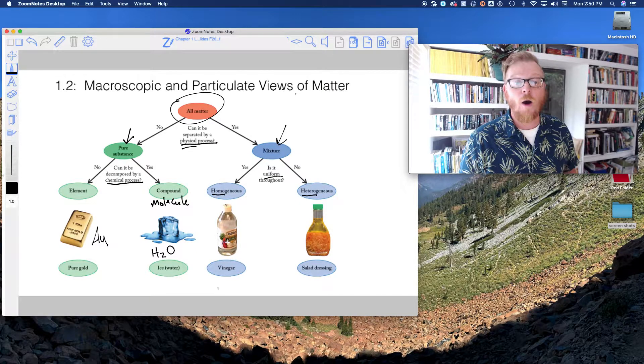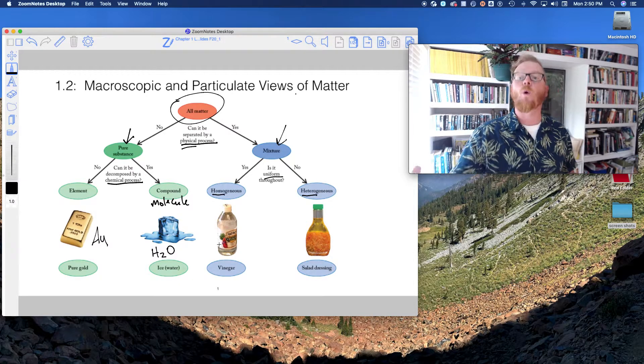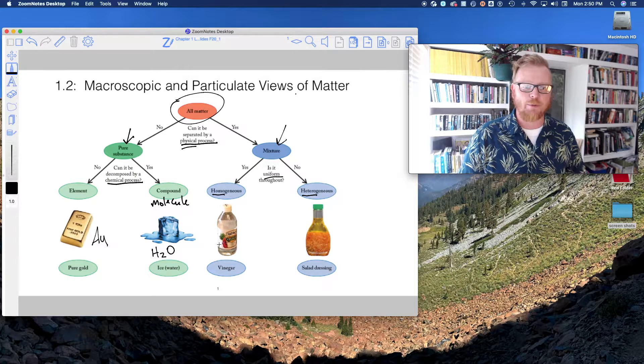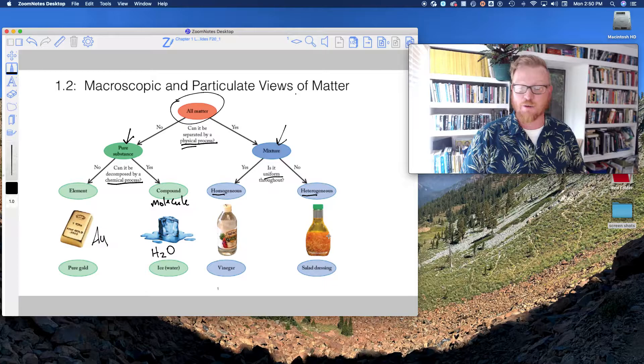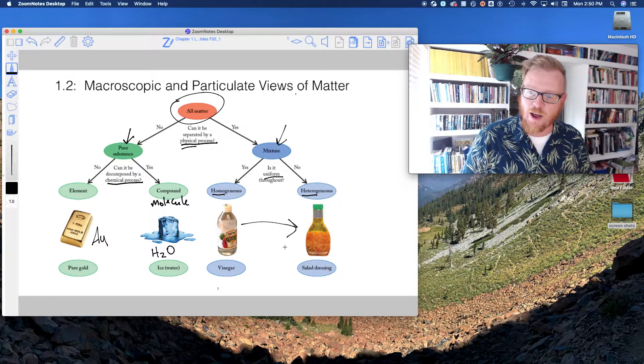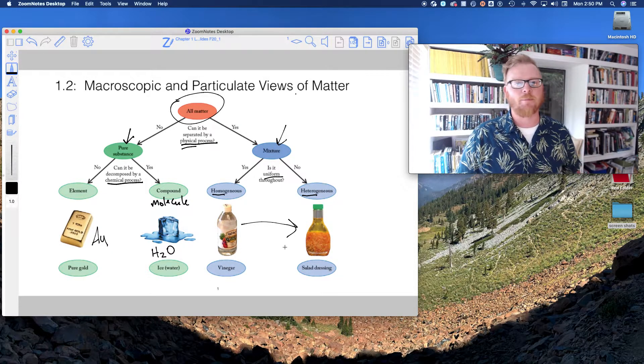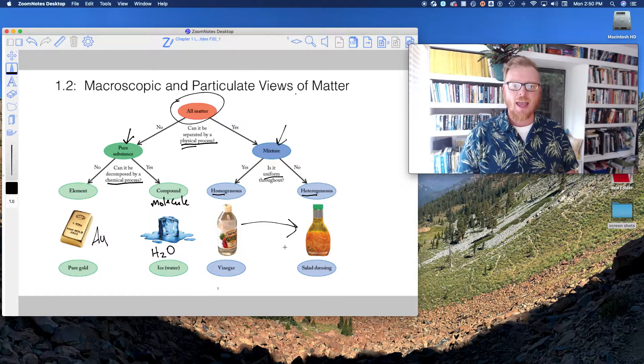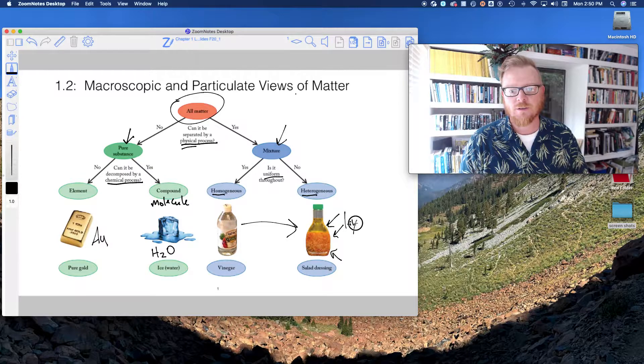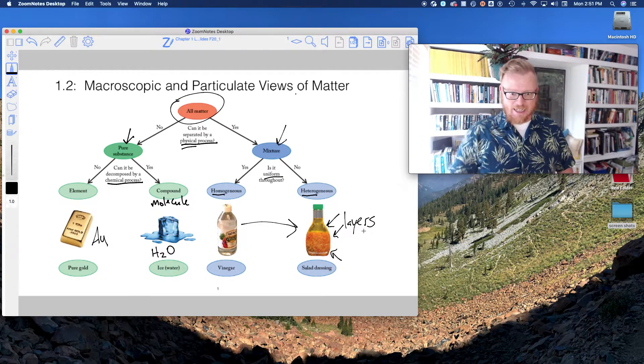So now we have two kind of interesting, fun examples here: vinegar and salad dressing. And you might be thinking to yourself, if you know how to make salad dressing, then yes, vinegar is in salad dressing. But there is also other stuff in salad dressing like olive oil, water, salt, maybe some lemon, maybe some garlic, maybe some pepper. Make your salad dressings tasty. And we know that it is heterogeneous because look at these different layers, right?